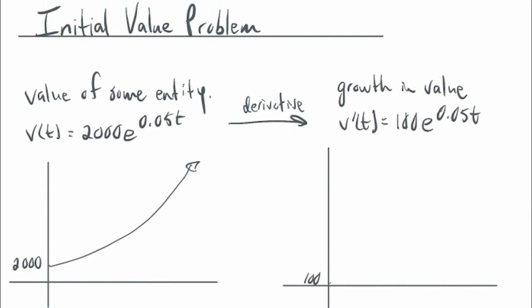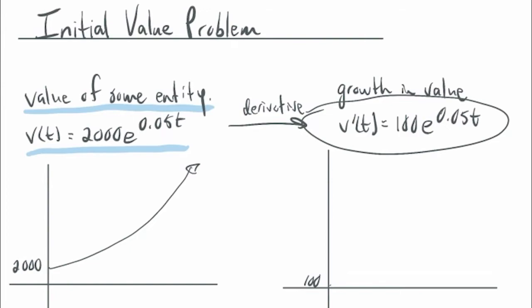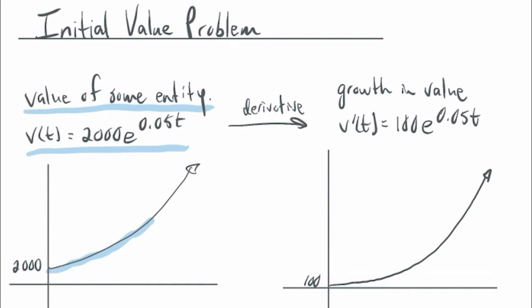Another way to think about this: when doing derivatives, you're looking at incremental small changes — the rate of change. When you do an antiderivative, you are accumulating those changes. It's sometimes called integral calculus because you're integrating — combining many small values into a larger value. For example, if V(T) = 2000e^(0.5T) is the value of some entity, that's an exponential growth model. The derivative V'(T) = 100e^(0.5T) gives the growth rate, which starts at about 100 and then grows exponentially.